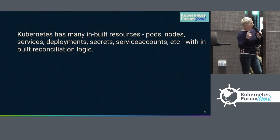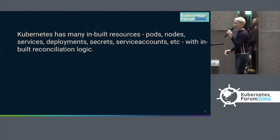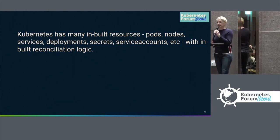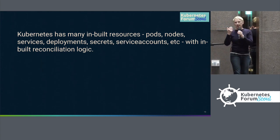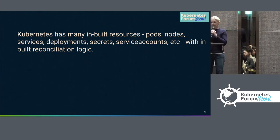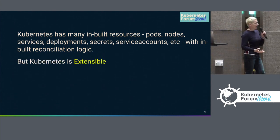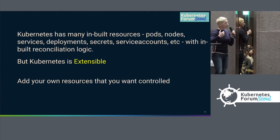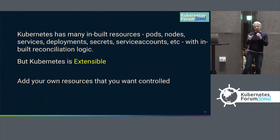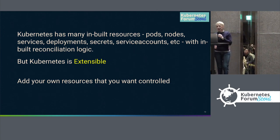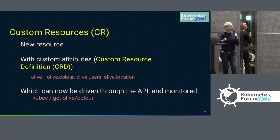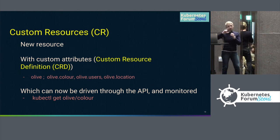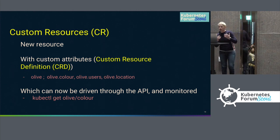Kubernetes has a lot of built-in resources — like pods, nodes, and services. But you can extend Kubernetes. It's got out-of-the-box resources, but you can add your own, because you might want to add your own things that you want maintained at desired state — something other than the ones that come out of the box. These are called custom resources. They're resources that you are telling Kubernetes to look after and reconcile their state.